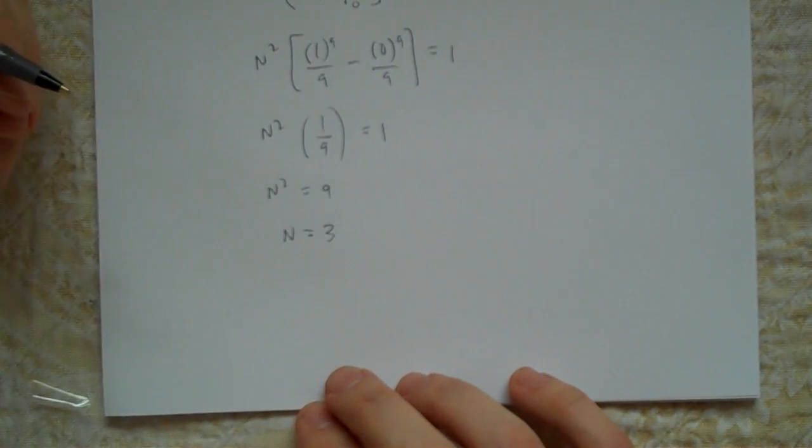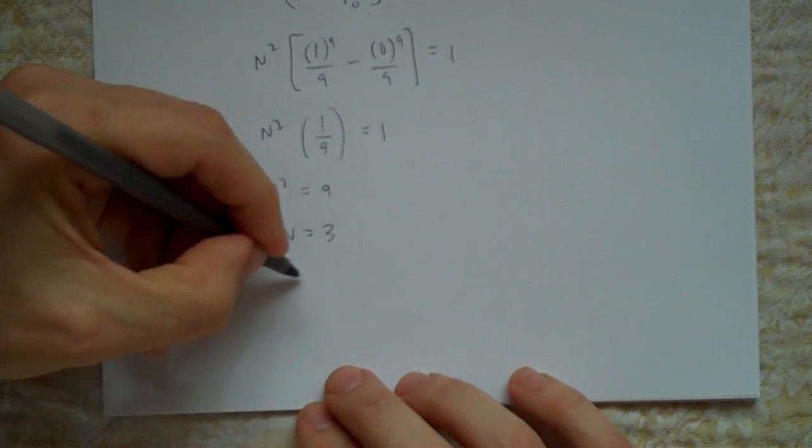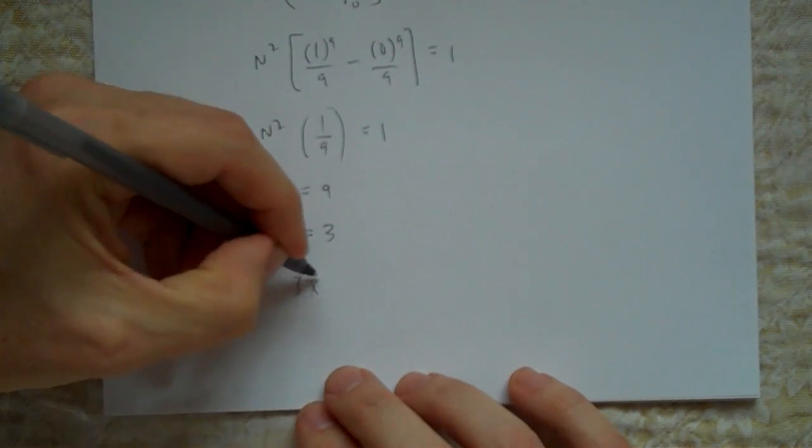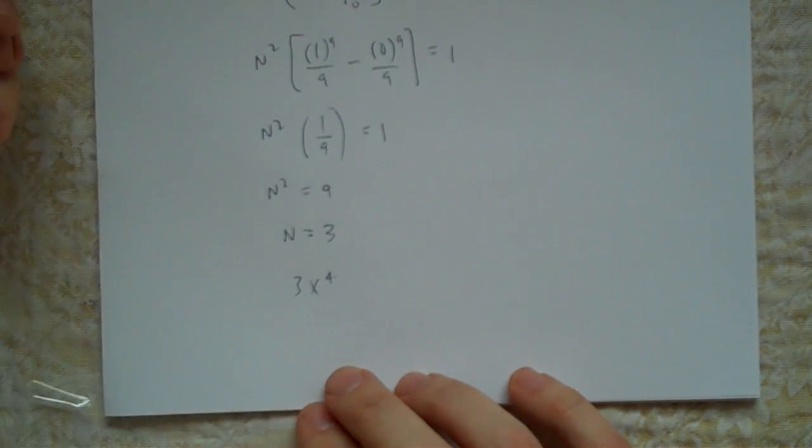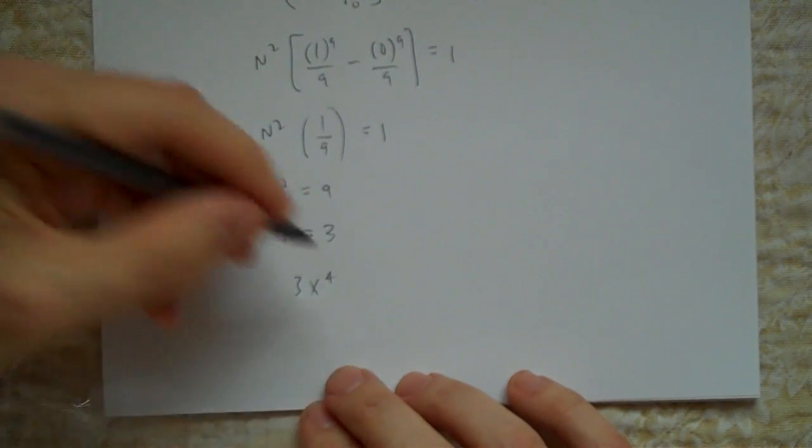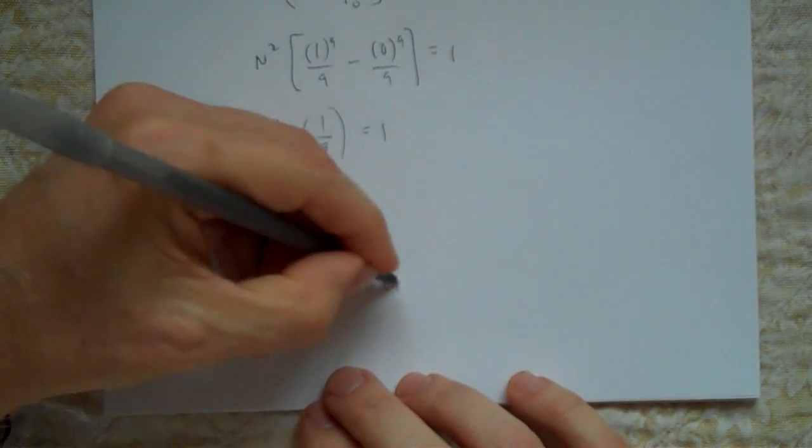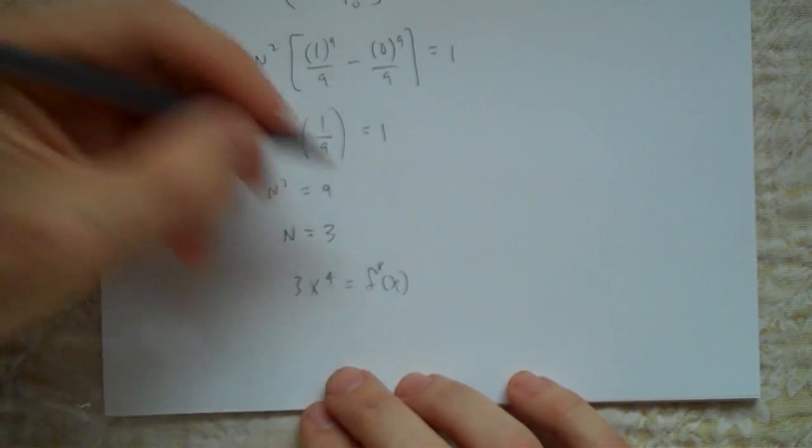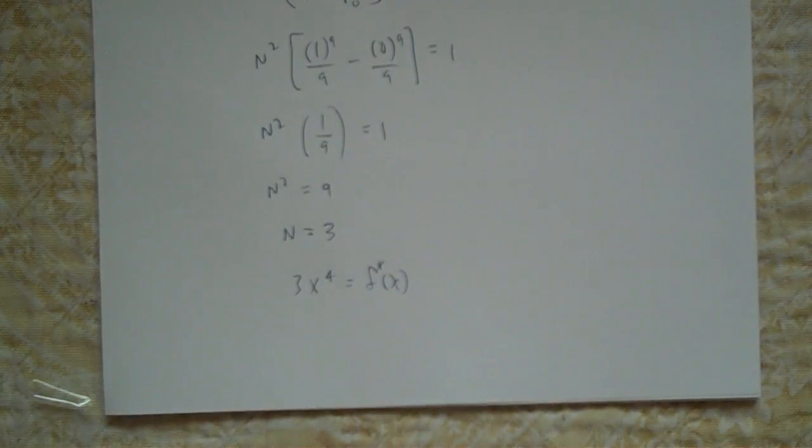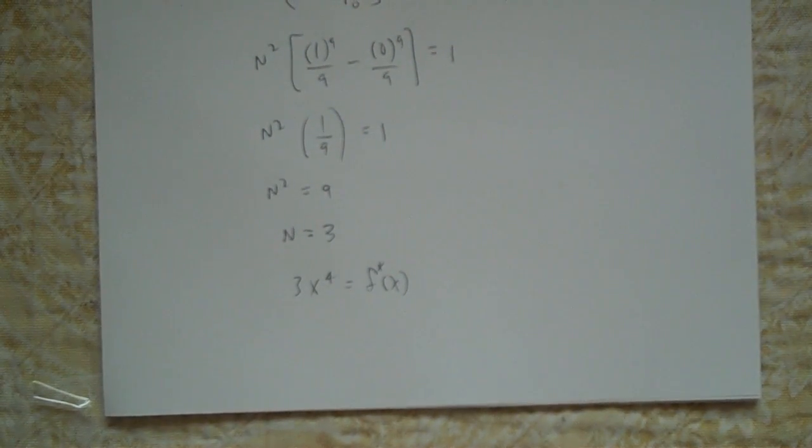And so the normalized function is going to be 3x to the fourth equals f(x), or f star of x. Thank you, hope that's helpful.